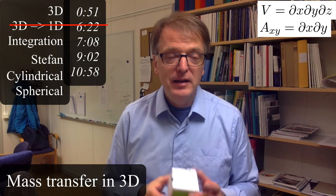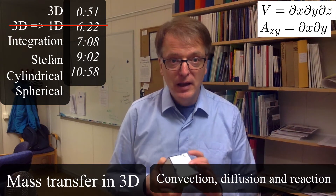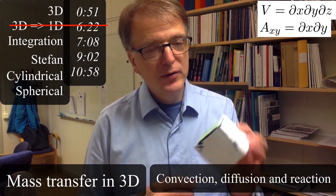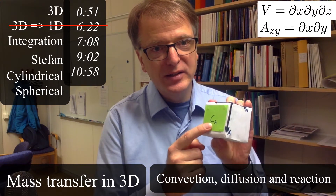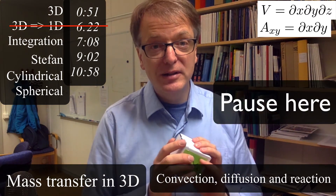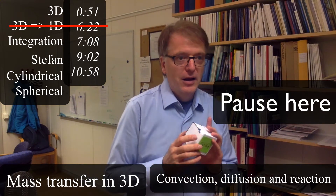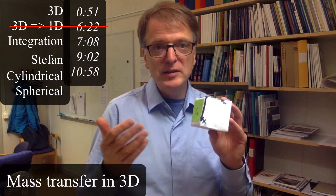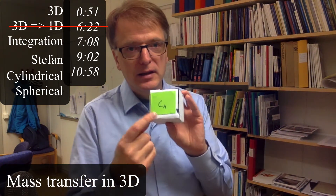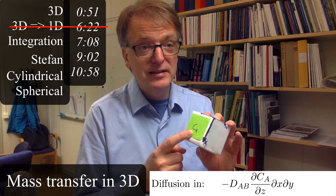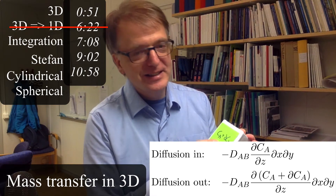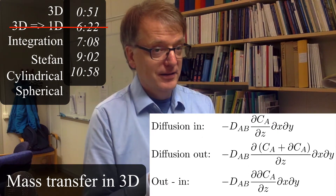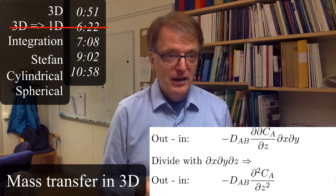Now let's include diffusion and reaction as well. For the diffusive part, think of flux happening in the two planes of the cube. The concentration differs between the two faces. The diffusive flux is minus diffusivity times the concentration gradient, so on one side it's dCA/dz times the area, and on the other side (CA plus dCA) divided by dz, times diffusivity and area.